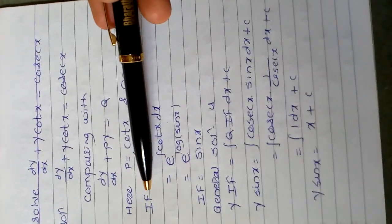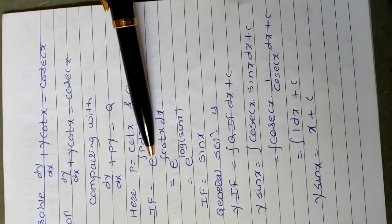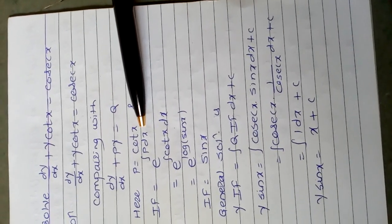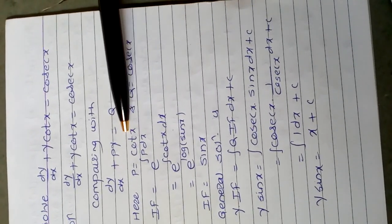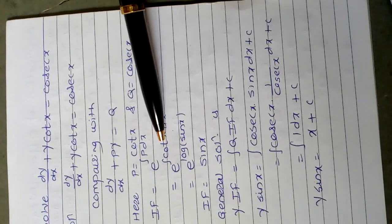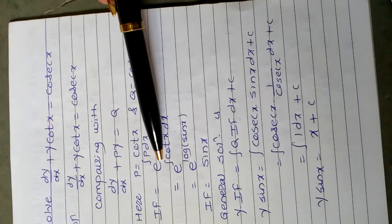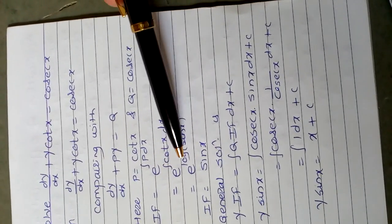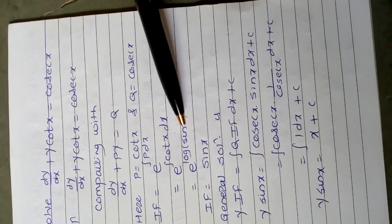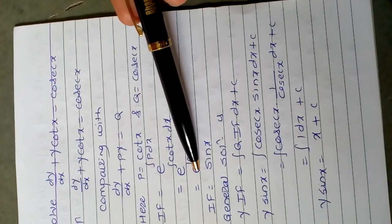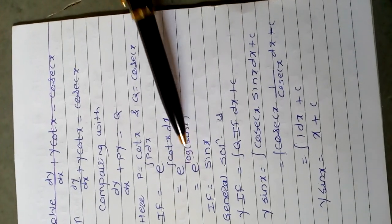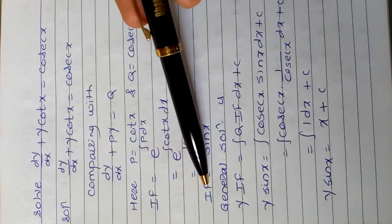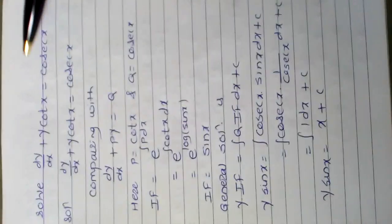Then we find the integrating factor using the formula e raised to the integration of P dx. Putting P equals cot(x), the integral of cot(x) with respect to x is log of sin(x). Since e and log cancel as they are inverses, the remaining term is sin(x). Therefore the integrating factor is sin(x).